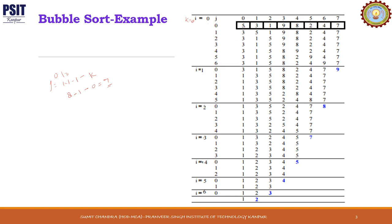We compare a[j] and a[j+1]. When j is equal to 0, we are comparing 5 with 3. Since 3 is smaller, we exchange 5 and 3. When j is equal to 1, we are comparing 5 and 1. Since 1 is smaller, we again exchange. When j is equal to 2, we are comparing 5 and 9 — no change, because 5 is already smaller. When j is equal to 3, we are comparing 9 and 8. Since 8 is smaller, we swap.